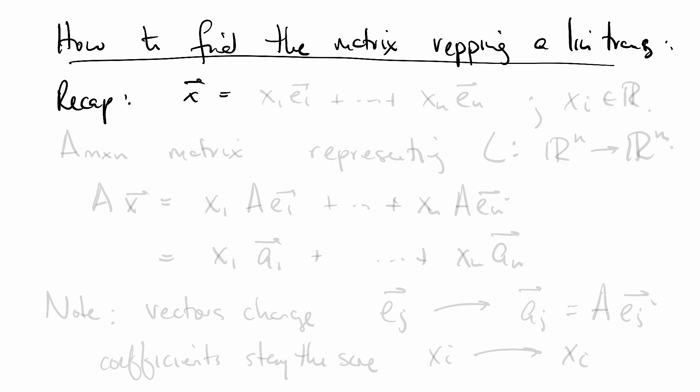Recap. Say X is this vector where X_i's are some real numbers. A is an M by N matrix representing linear transformation R^n to R^m. A times X is X_1 A times E_1 plus dot dot dot X_N A times E_N.